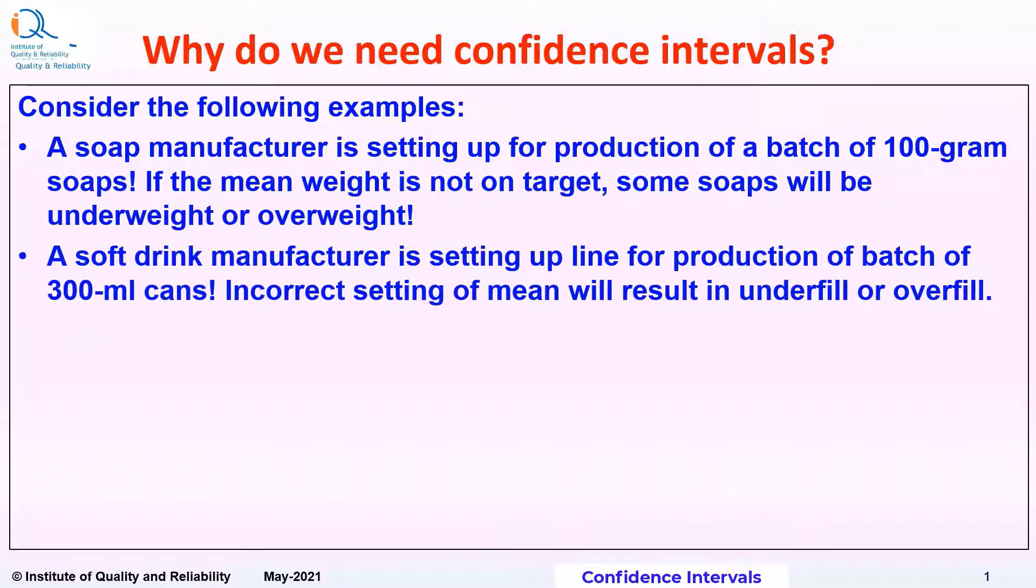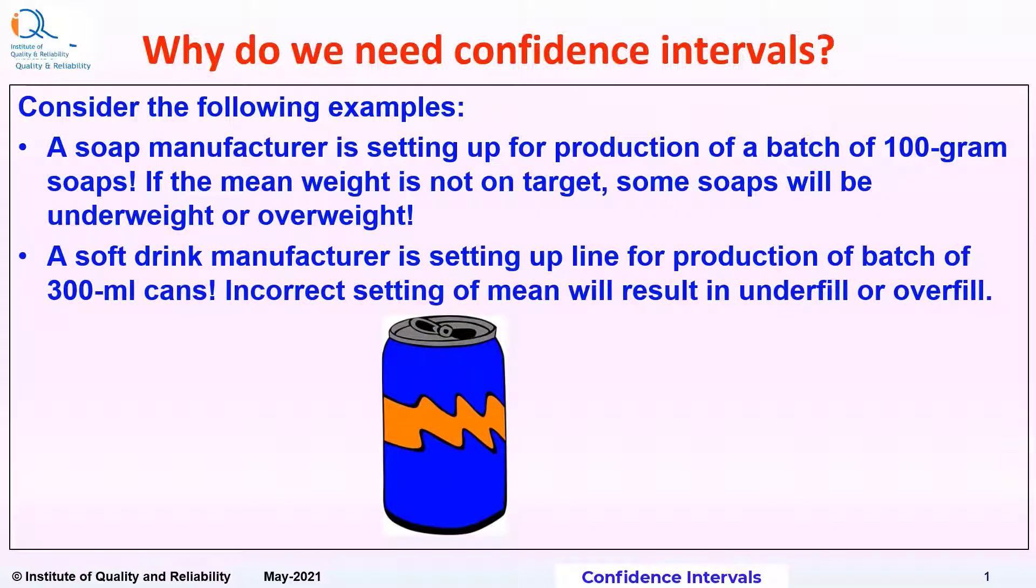Another example. A soft drink manufacturer is setting up line for production of batch of 300ml cans. Incorrect setting of the mean will result in underfill or overfill.